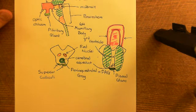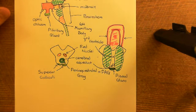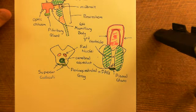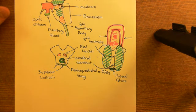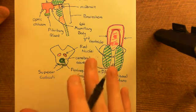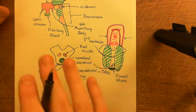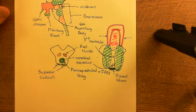And knowing this anatomy is going to help us a lot later when we need to discuss other structures that are very much so involved in the pathology of Alzheimer's disease. We'll be able to describe very easily where they are, having done all of this neuroanatomy.